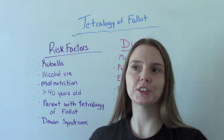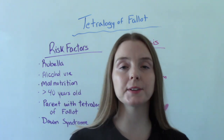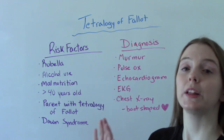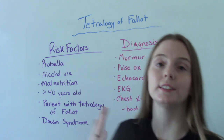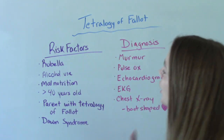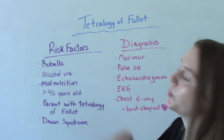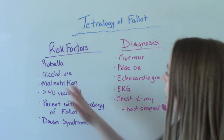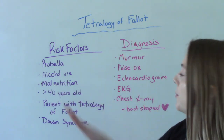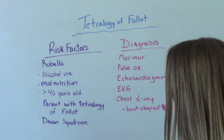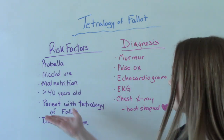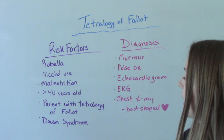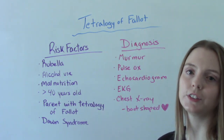When it comes to the cause, there actually isn't one — it's an unknown cause. But there are some risk factors that could contribute. A lot of these are related to mom during pregnancy, because this is a congenital defect — you're born with it. Risk factors include if the pregnant woman is infected with rubella (German measles) during pregnancy, alcohol use during pregnancy, being malnourished or over the age of 40, or if the parents have had a history of it themselves — so there's a genetic component. And if the baby has other conditions like Down syndrome, that is also a risk factor.